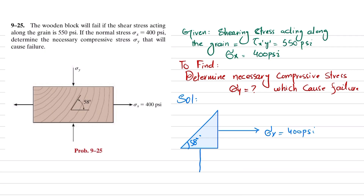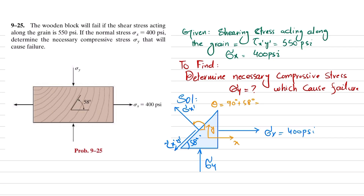Sigma_x is 400 psi, sigma_y is unknown and compressive. At the transformed surface, the stresses are sigma_x' and tau_x'y'. The initial x-axis and y-axis are the original axes. The transformed angle theta equals 90 degrees plus 58 degrees, which gives theta equal to 148 degrees.